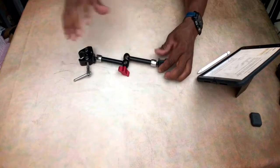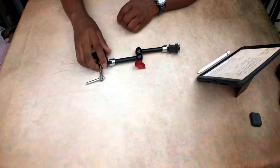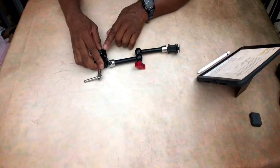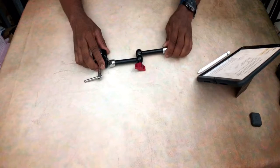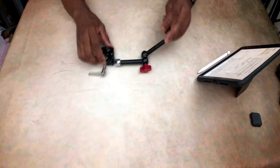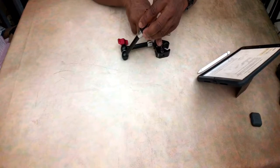The magic arm itself attaches to the super clamp via quarter-twenty, but it also has that three-eighths hole right here in case you should need that. The way this is basically going to work is you're going to manipulate it the way you want it, get it mounted via the super clamp.